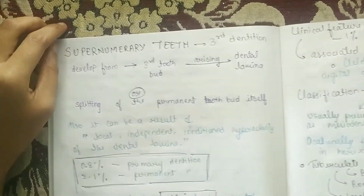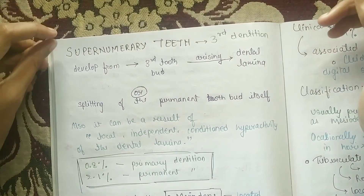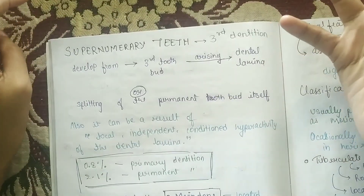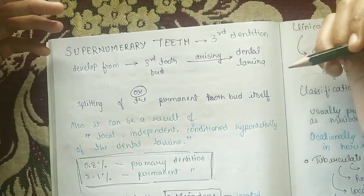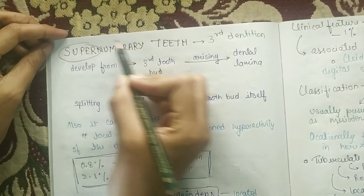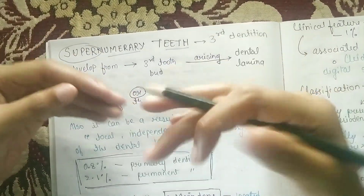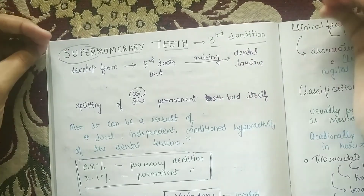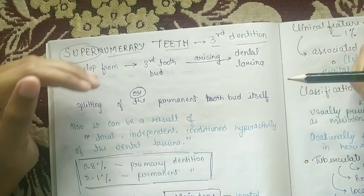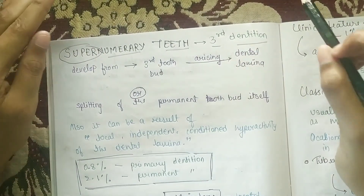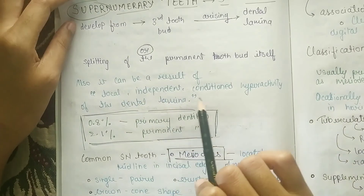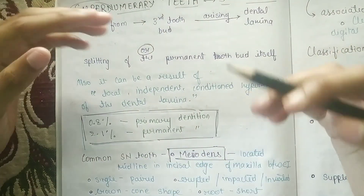For supernumerary tooth, especially in NEET MDS you will get questions like: what is distomolar, what is paramolar, peridens, mesodens. We will discuss all these terminologies. Supernumerary tooth is also called third dentition. In development, a third tooth bud arises from the dental lamina — you can say it is splitting of the permanent tooth itself.